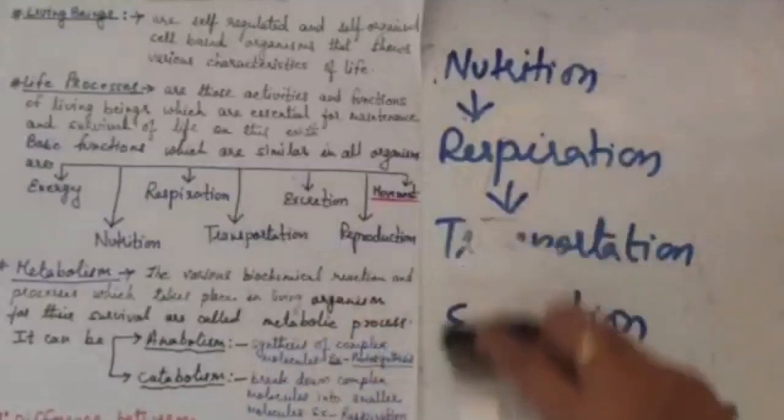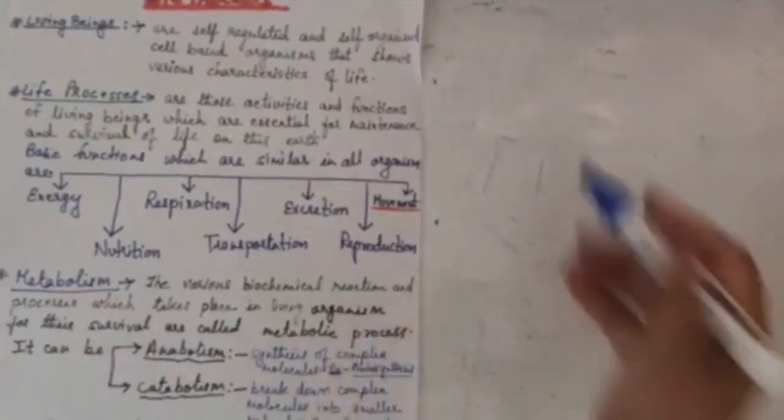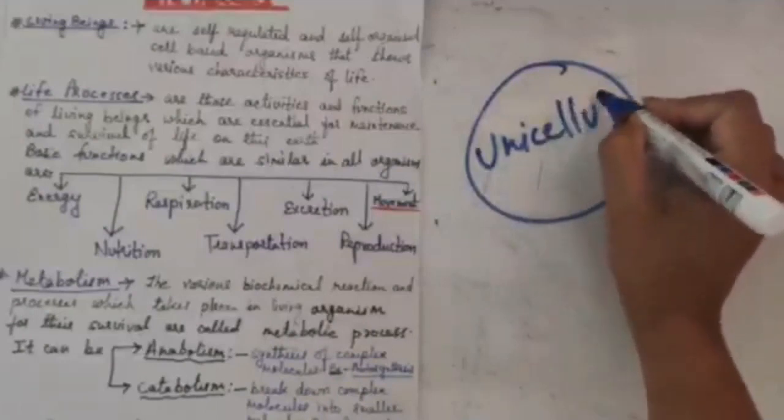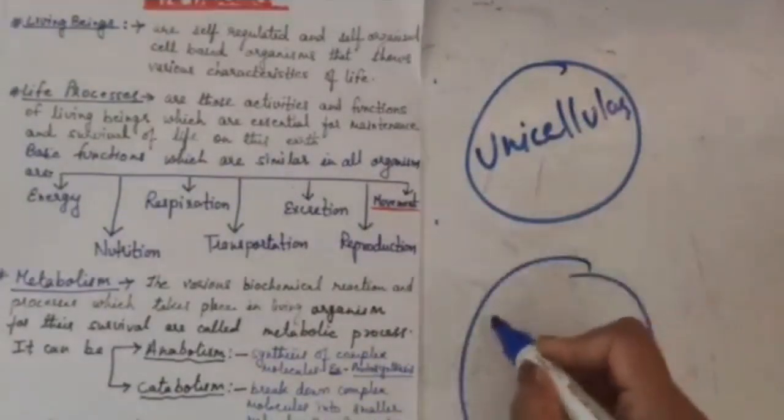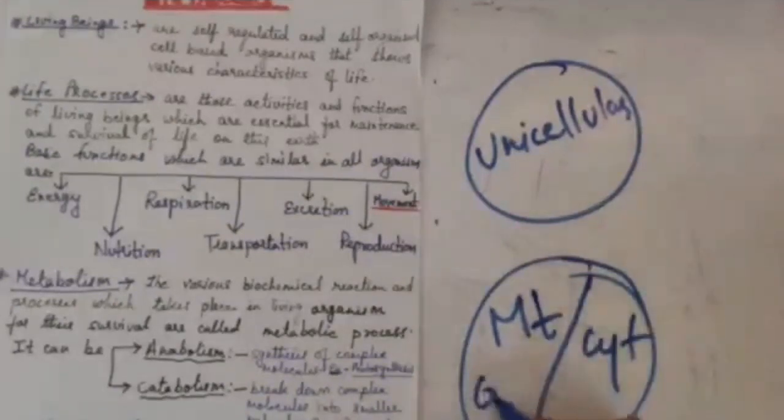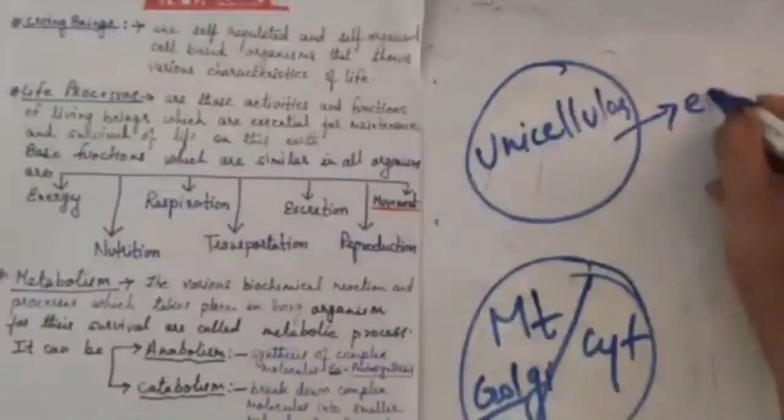Now the means of transportation of material and oxygen in unicellular and multicellular organisms are different. In unicellular organisms there is no specific cellular organelles or specific functions performed by any single cell, but in multicellular organisms we see there are clear cut division of labor. That means mitochondria, cytoplasm or Golgi bodies are specialized in their specific function, but in unicellular there is a single cell which is always in contact with the outside environment.